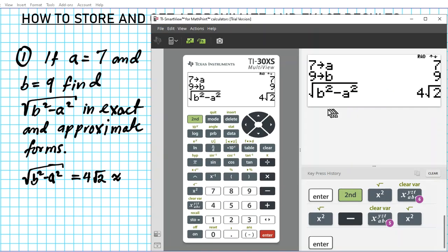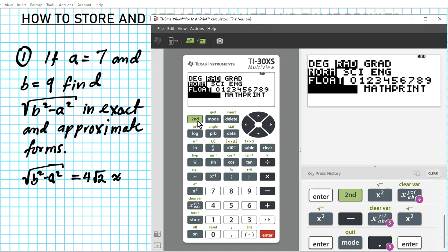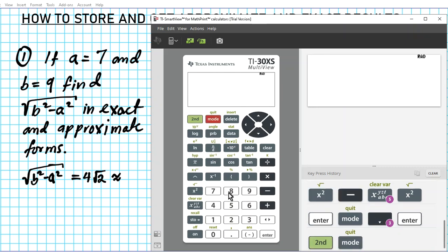Alright. So the approximate form, go back to mode. And can you guess what it's going to be? Remember, math print is exact and classic is the approximate form. So scroll down. Press enter. Classic is selected. Quit.